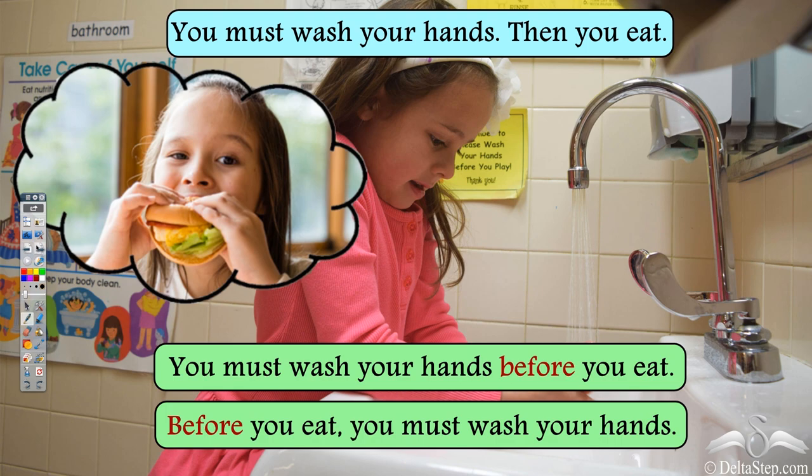We can also write this sentence in another way by starting it with 'before': 'Before you eat, you must wash your hands.' After writing 'before you eat,' we put a comma to make it clear which action is happening first. This action — you must wash your hands — is happening first, before you eat.